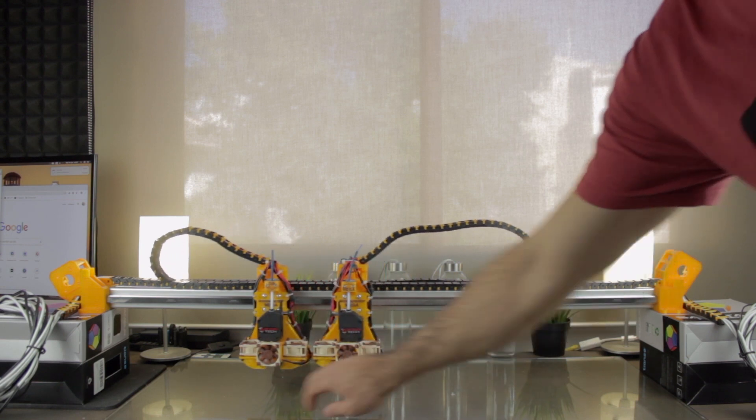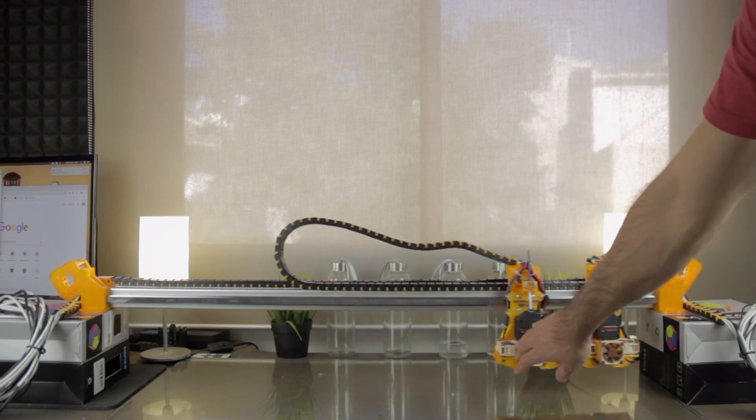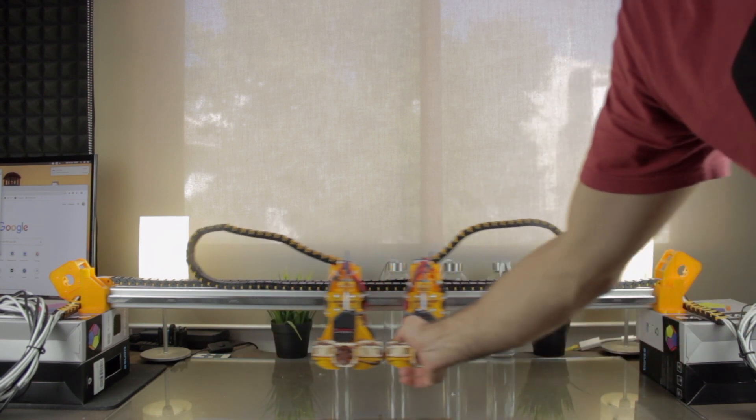And both extruders can move very smoothly thanks to the Hiwin carriages and railings provided by DamenCNC. I'm gonna leave you now with a few cool shots of what we have built so far, and we will continue in a few seconds.